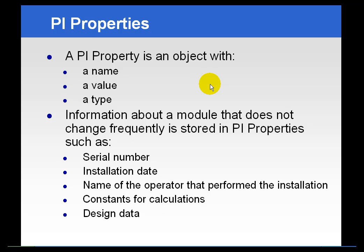PI Properties are places in the module database — think of them as little slots associated with each module — where you can store pieces of non-dynamic type information. That's not to say they can't change over time, but properties are really designed to hold information that wouldn't be appropriate for a tag, like manufacture or maintenance date. Those are items you could create tags to store, however, if you're just going to create a tag to store one or a handful of values over time, you're not really using the tag as it was designed.